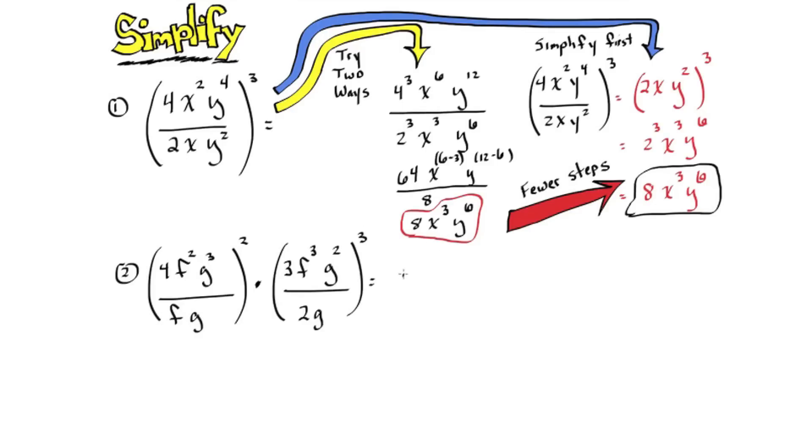On number 2, why don't we just go straight to simplifying everything inside the parentheses first and then we'll take care of the power outside the parentheses. We can simplify the coefficients and combine the exponents because they have the same basis and we get 54f to the eleventh, g to the seventh.